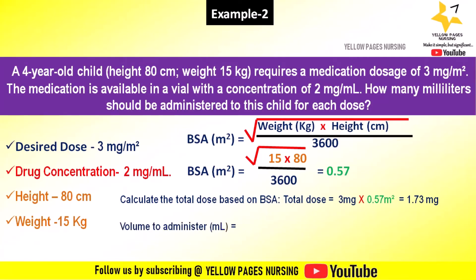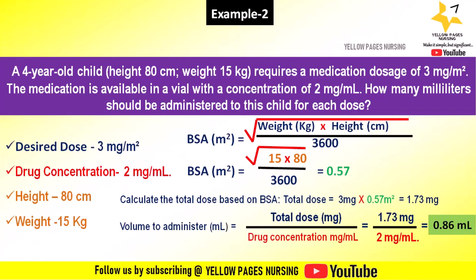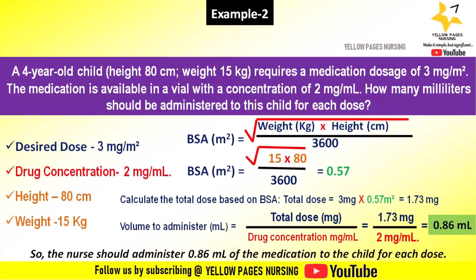Now the final step is calculating the volume to be administered. Volume to be administered in ml equals total dose in milligrams divided by drug concentration in milligrams per ml, which equals 1.73 milligrams divided by 2 milligrams per ml, giving the answer 0.86 ml. So the nurse should administer 0.86 ml of the medication to the child for each dose.